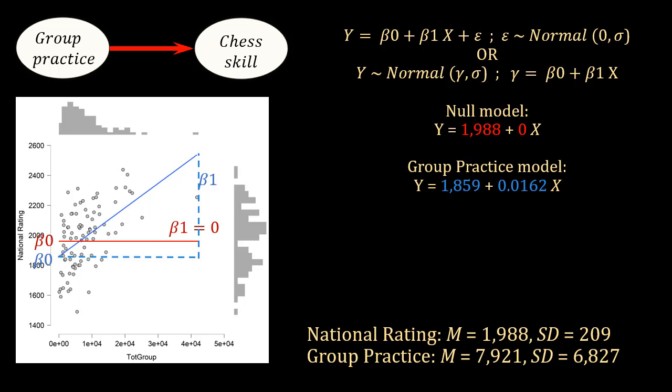Now, what we need to do is use the regression model that we explained in previous lectures. If we take Y as a random variable, we are going to use the national rating as this random variable. And we assume that the random samples we collect come from a population which is normally distributed with a mean of gamma and standard deviation of sigma. And then we are going to estimate gamma using two other parameters, beta 0 and beta 1. Beta 0 is the intercept, beta 1 is the slope, and X is the other variable, group practice. So we are trying to estimate skill with group practice.